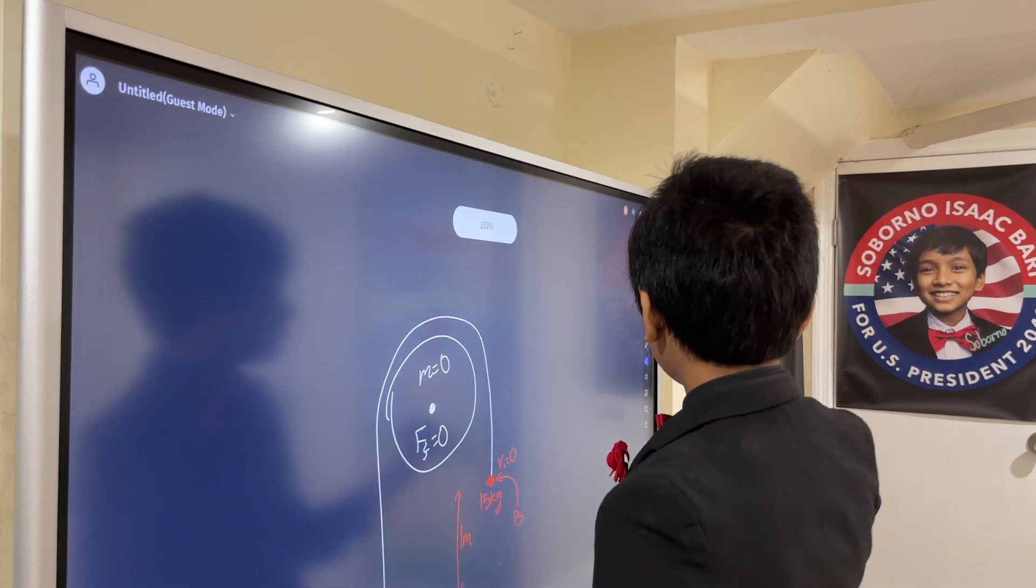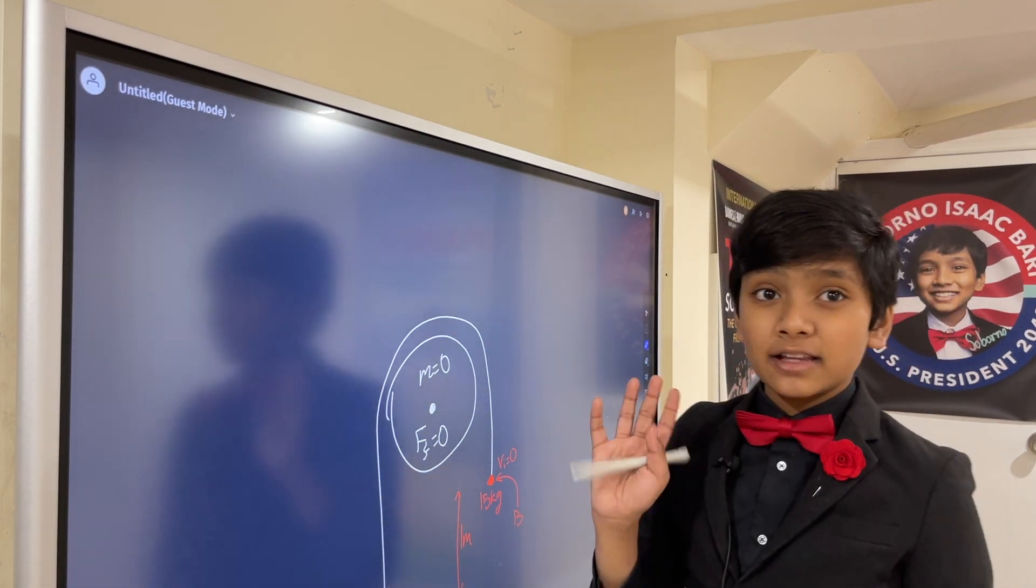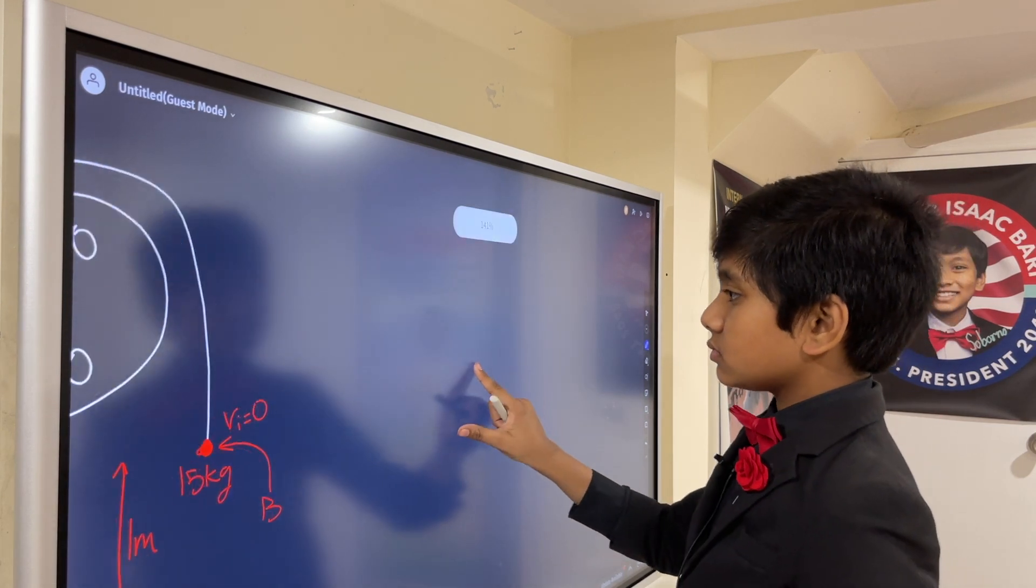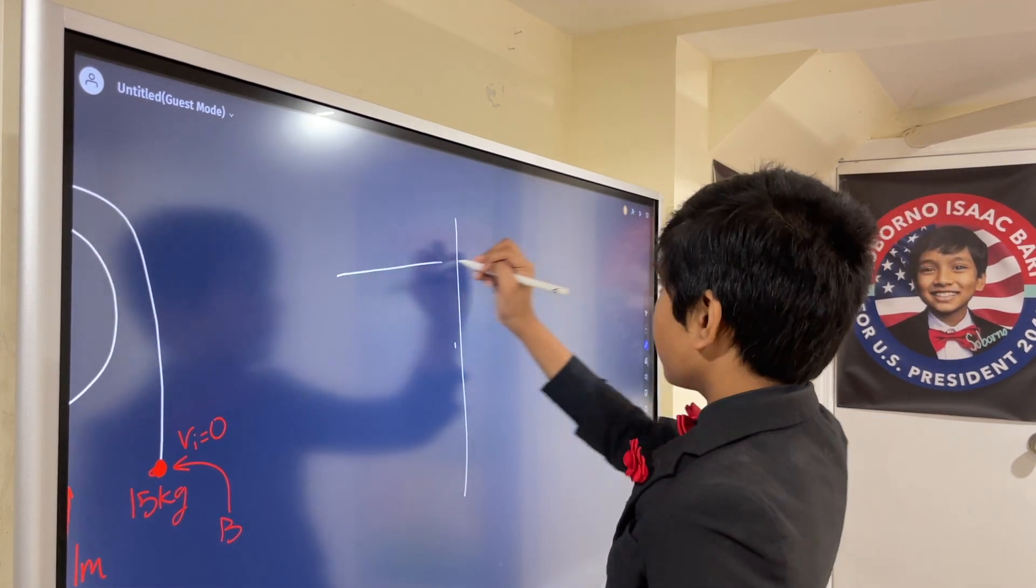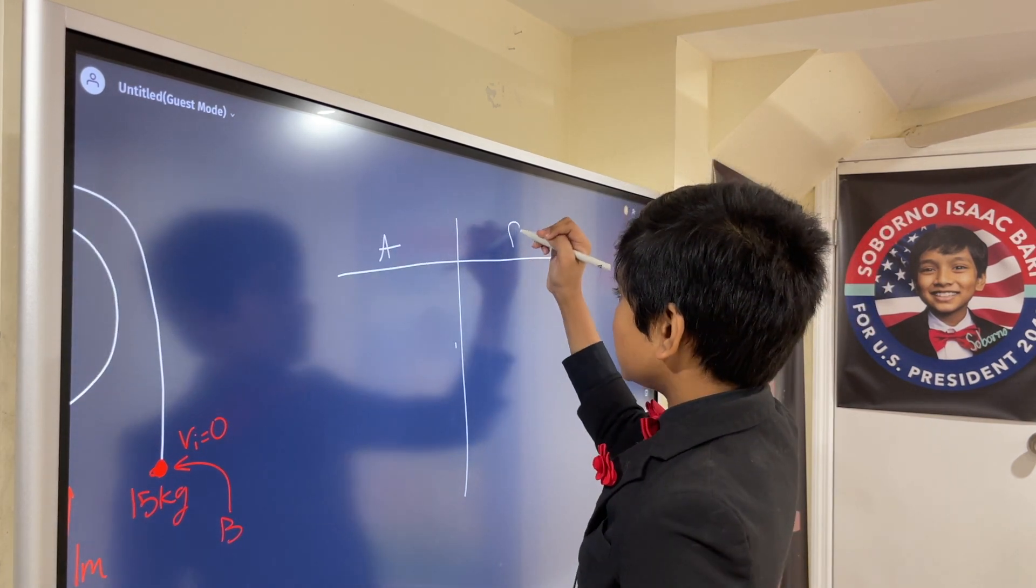So, how can we find that out? Well, first we need to find the acceleration. So, let's start by drawing a free body diagram. First for mass A, and then for mass B.